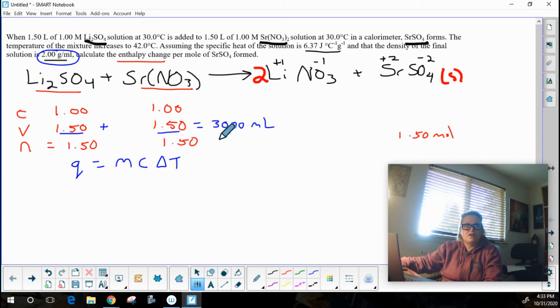And so 3,000 milliliters times 2 grams per milliliter is going to be 6,000 grams. Just pretend this is a really large calorimeter.